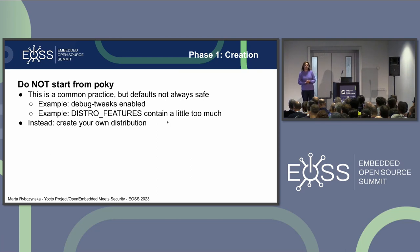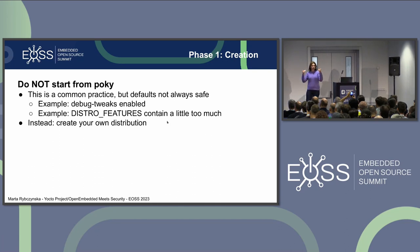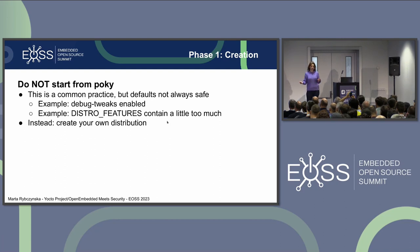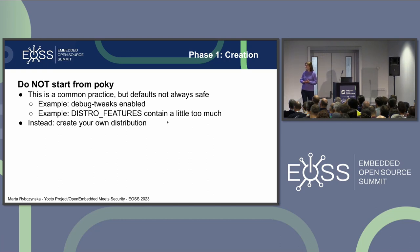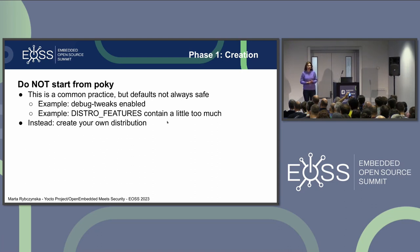Most developers of OpenEmbedded/Yocto start from Poky — and I tell you, don't. What you should be doing is create your own distribution with your own configuration options and your own decisions. Why shouldn't you use Poky in a product? Because it has options that are not secure by default. It makes it easier to start your development, but it's not ideal for the product. For example, debug-tweaks is enabled by default — my dream is to remove it from Poky one day. And there are distro features that have stuff we'll get into a little bit later.